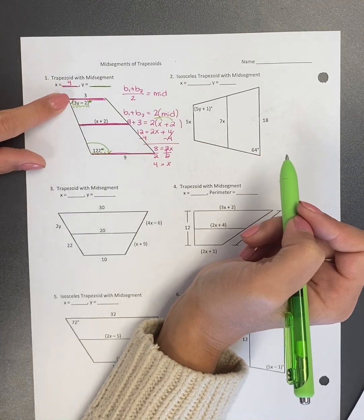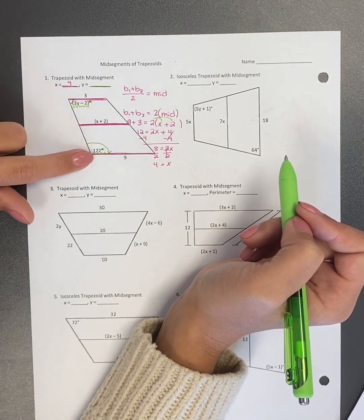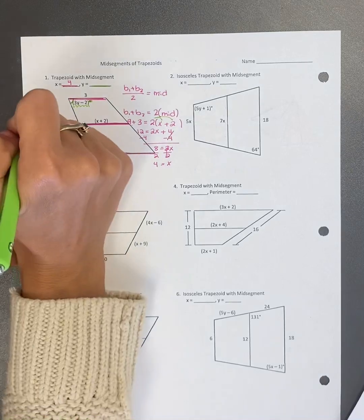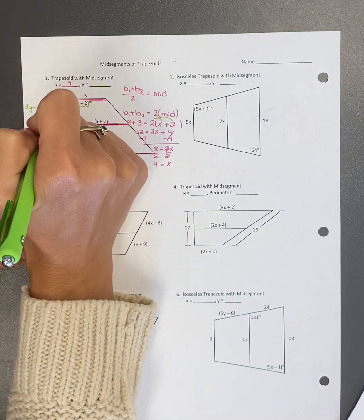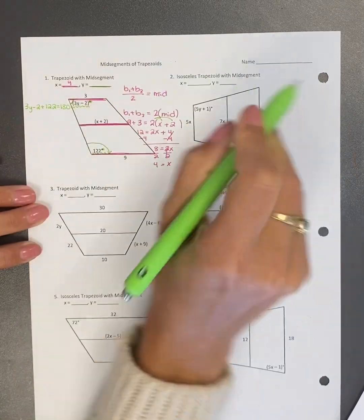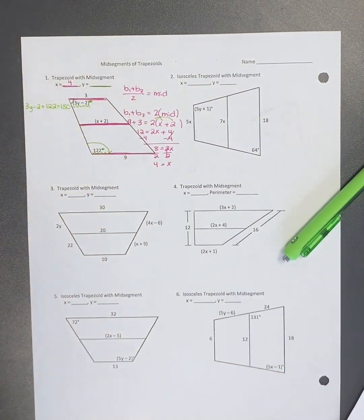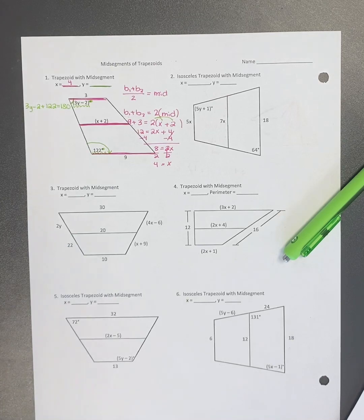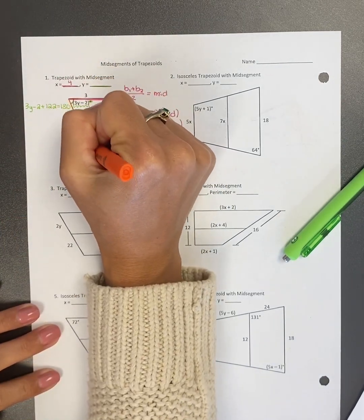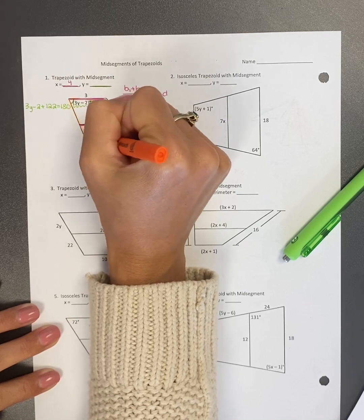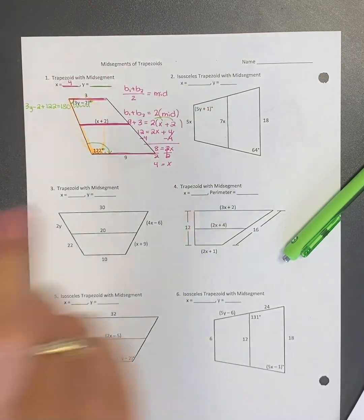They do not equal to each other because an acute angle will never equal to an obtuse angle. So I'm actually going to add them together and set it equal to 180 because when we did this, we talked about same side interior angles are consecutive, meaning that they add to make 180. So these two angles are on the same side of the shape together. So I'm going to add to make 180.